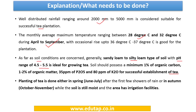Planting of tea is usually done in spring — that is in the month of June and July — after the first few showers of rain. It may also be done in autumn, that is October and November, because in those months the soil is still moist, and we also have the facility of irrigation. Kindly pause the video and make sure that you remember all these data points.